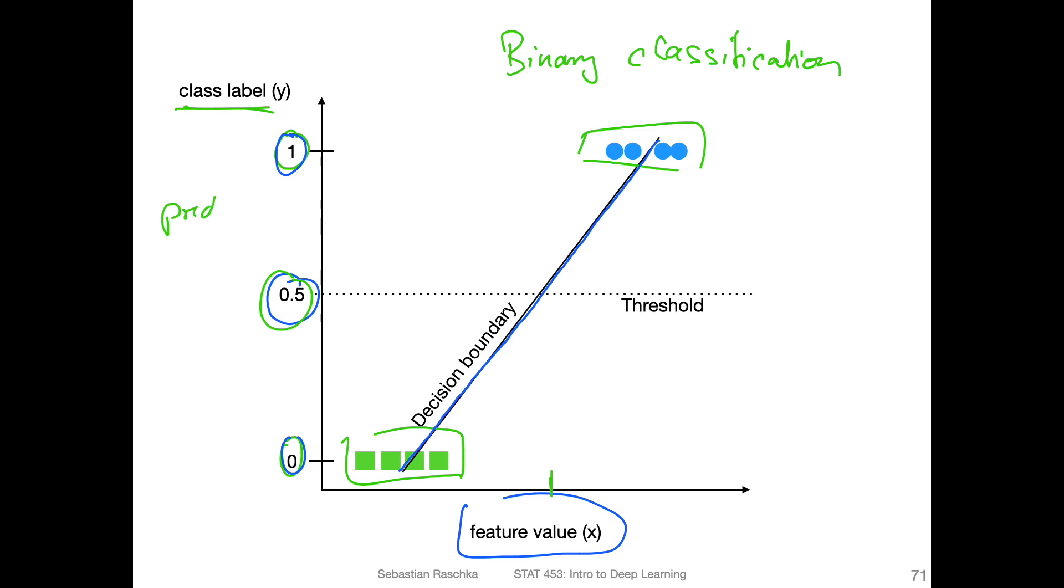Otherwise, produce class label zero. So in that way, we turn the continuous prediction into a class label. Again, this will become clear when I show you the code example.